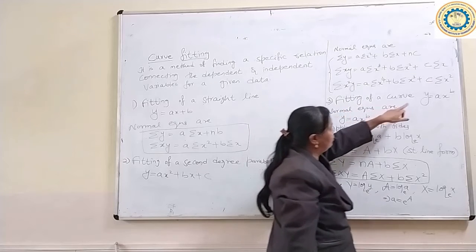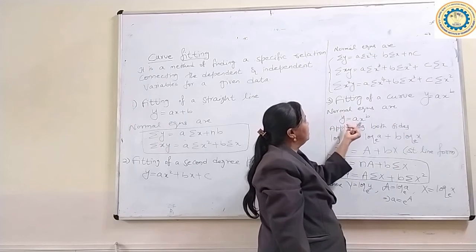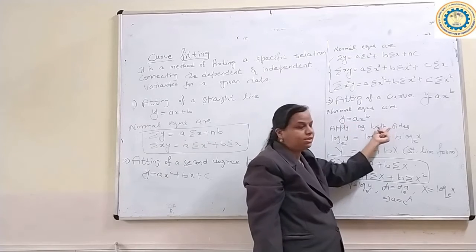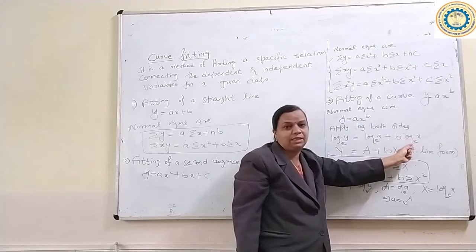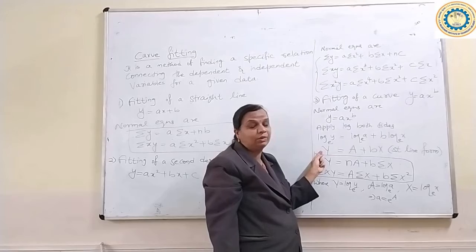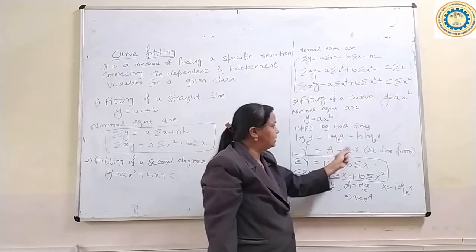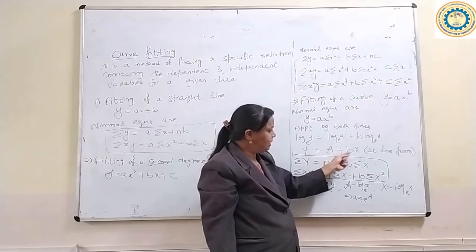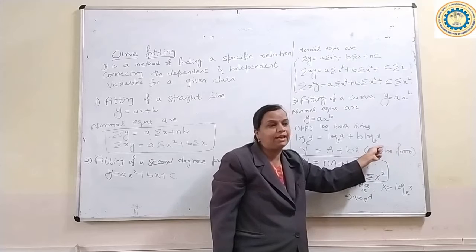Third type is fitting of a curve of the form Y equal to A into X raise to B. Apply log on both sides: log Y to base E equals log A to base E plus B into log X to base E. Denoting log Y as capital Y, log A as capital A, and log X as capital X, the equation becomes Y equal to A plus BX, which is again straight line form.